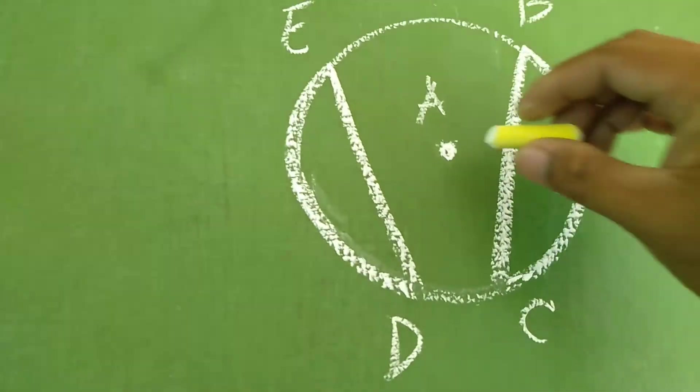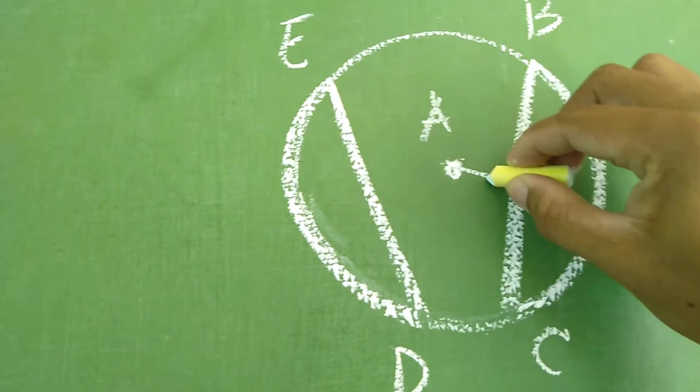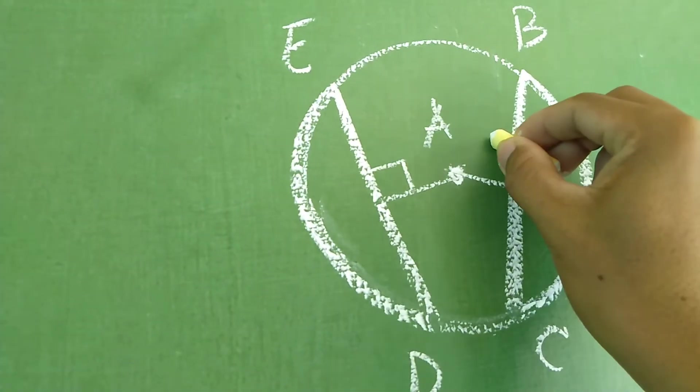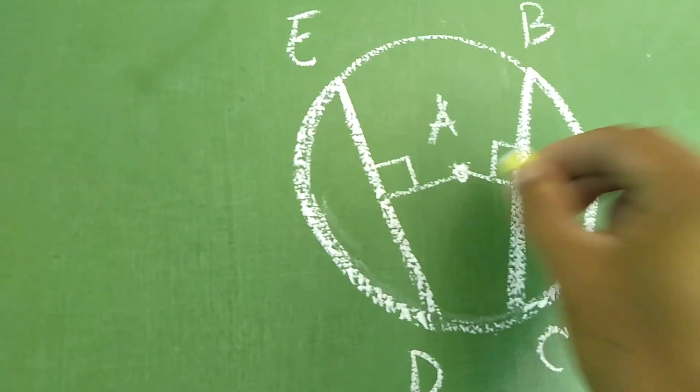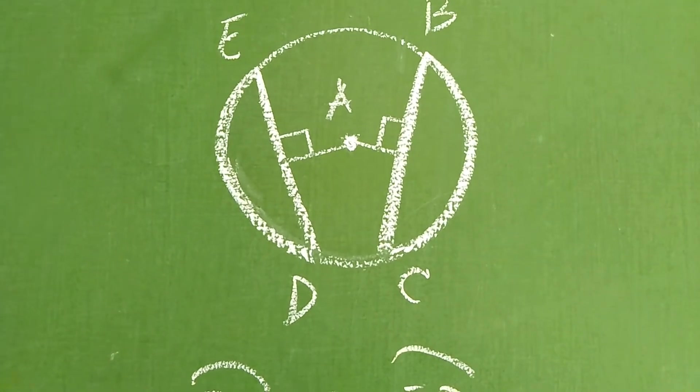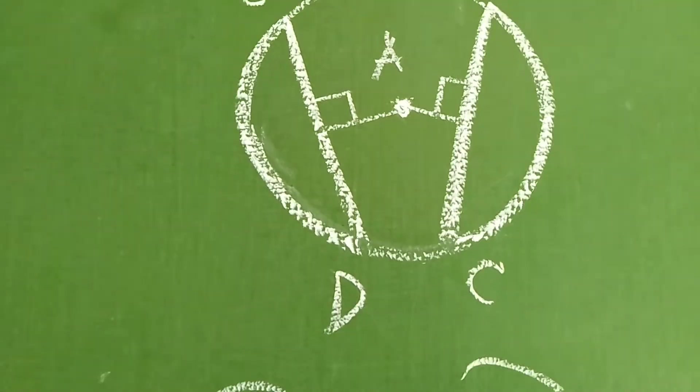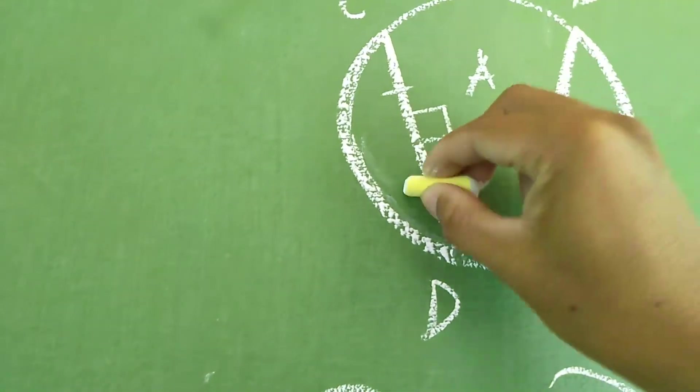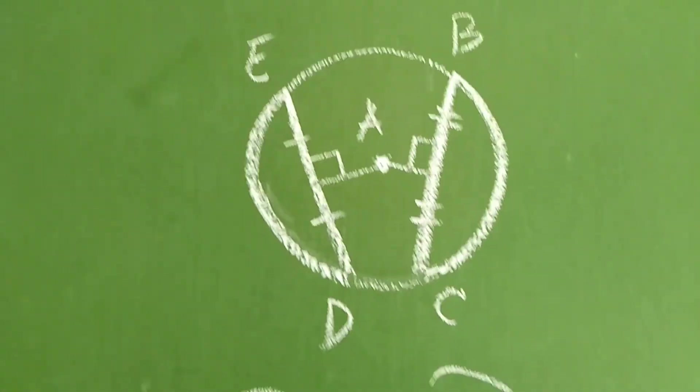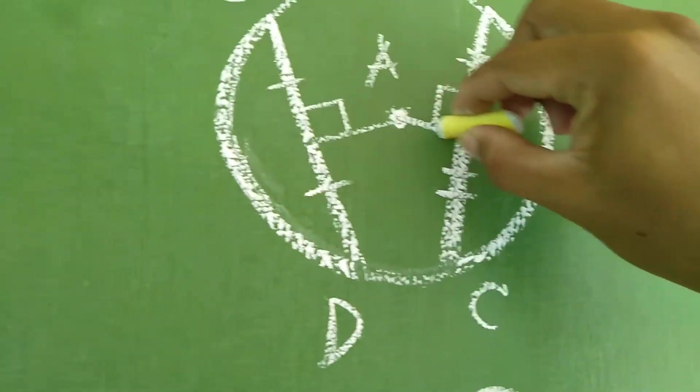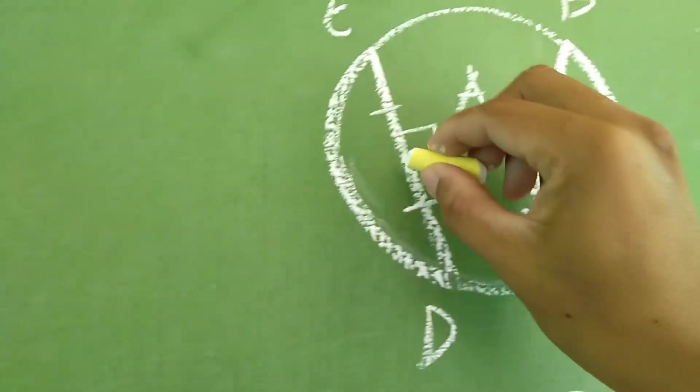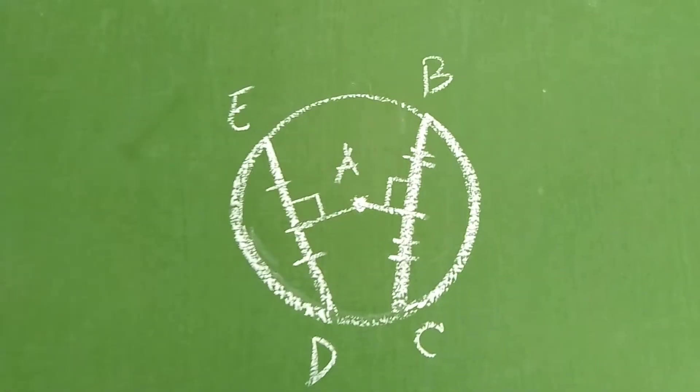Next, pag nagkaroon daw po tayo dito ng line, and then here is another line, at yun po ay perpendicular, okay, ibig sabihin ng perpendicular, 90 degrees po yun. Makakabuo tayo, makagawa po tayo ng 90 degrees. Ibig sabihin din daw po, hinati po natin ito into two equal parts. Ibig sabihin, yung line na ito na bisect niya into two equal parts. Into two equal lines.